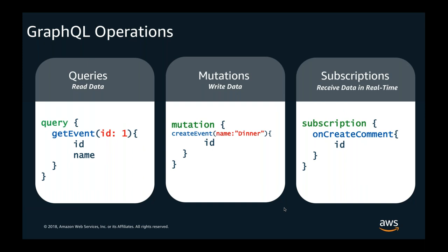GraphQL supports three types of operations: queries to read data, mutations to write or update data, and subscriptions — which are specifically linked to mutations and allow you to receive data in real time whenever data is changed or updated.